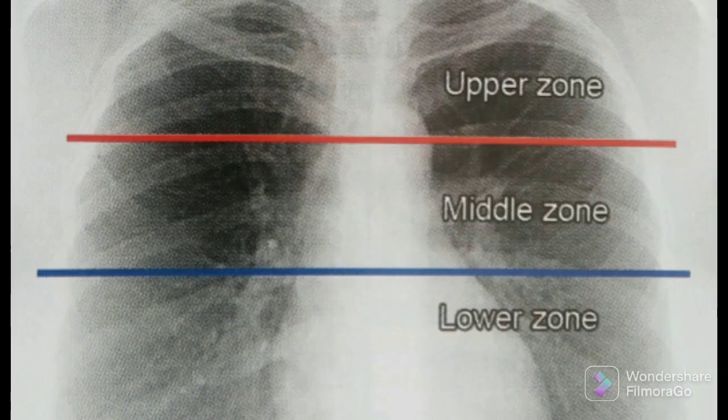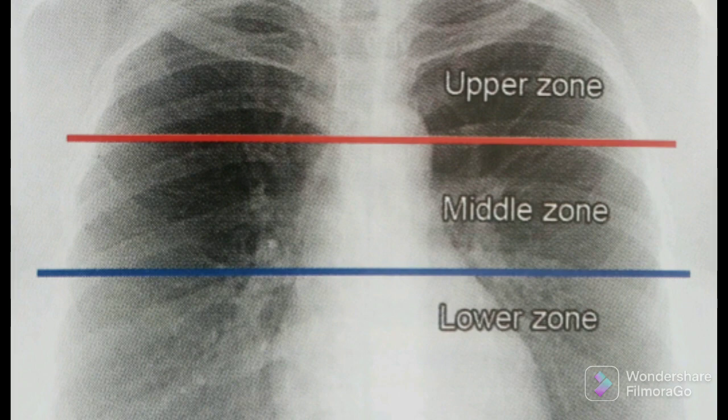Now we are talking about the zones of the lung. We have two lines drawn here: the red line passes through the anterior inferior end touching both second ribs, and the blue line passes through the same but at the fourth rib. The area between the red and blue line is the middle zone; above the red line is the upper zone; and below the blue line is the lower zone. Note that these zones do not correspond to the lung segments.